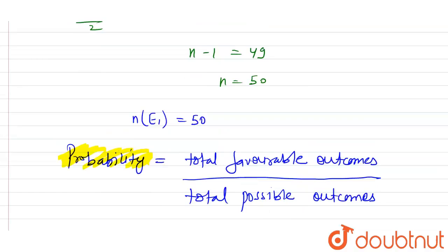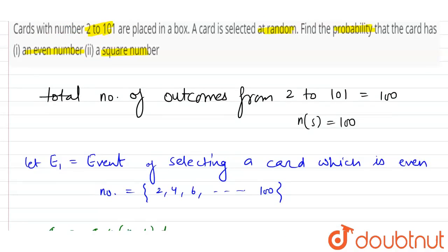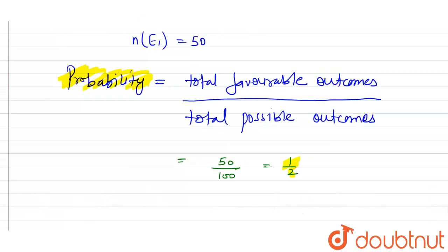Now in the second part, he is asking the probability that the number is a square number. So let E₂ is equals to event such that number is a square number.